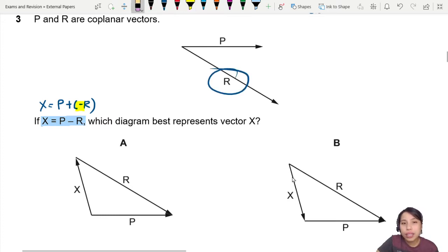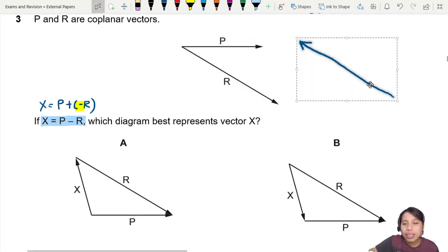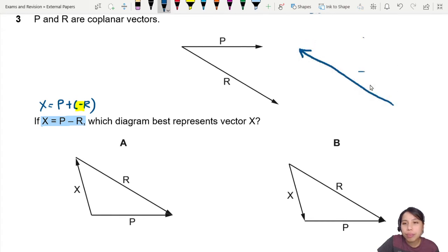So if this vector here is R, how would minus R look like? Minus R will be the same magnitude but in the opposite direction. So I just drew it over and I can take it out. This here, my friends, is minus R.